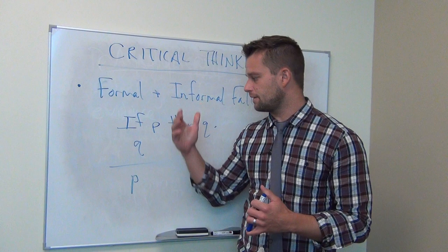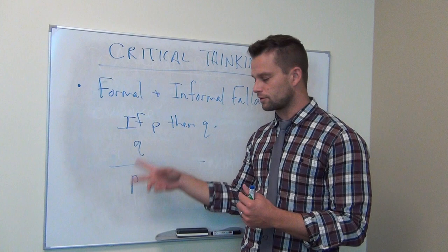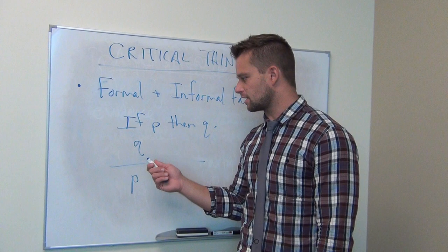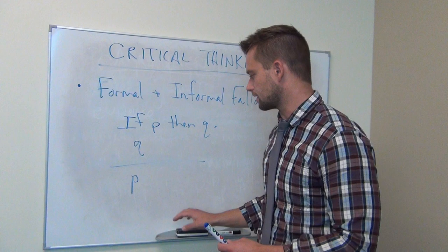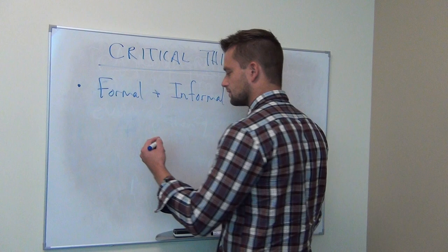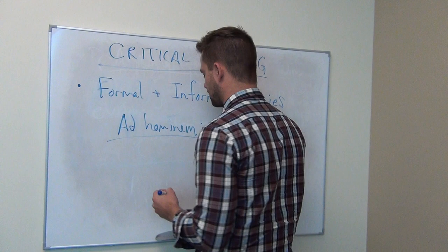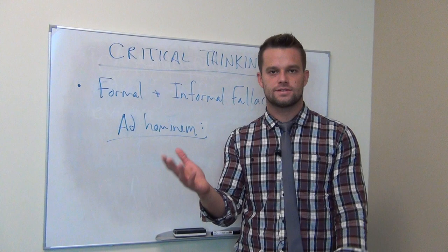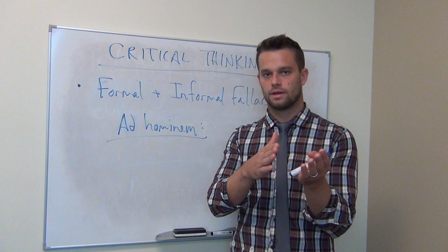People do this all the time. If you use a structure like that, it means that even if the premises of your argument are true, the conclusion could be false — so you need to rework your reasoning. In addition to formal logical fallacies, there are informal logical fallacies, like the ad hominem fallacy — the fallacy 'to the person.' In the ad hominem fallacy, somebody presents an argument and then the opponent attacks the person rather than the argument.